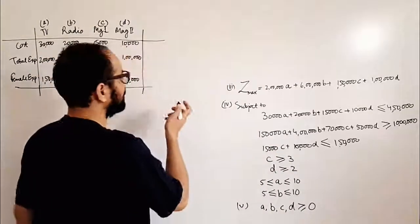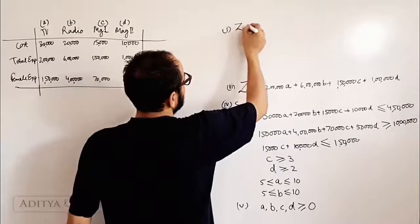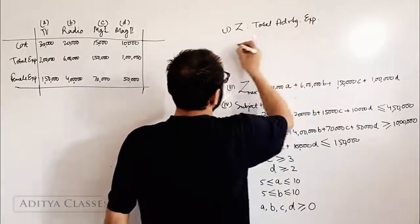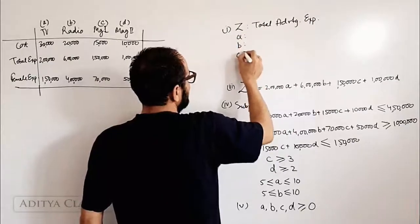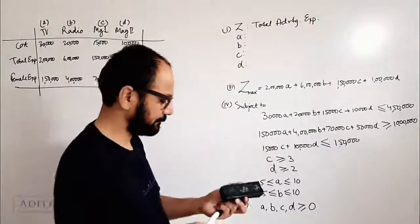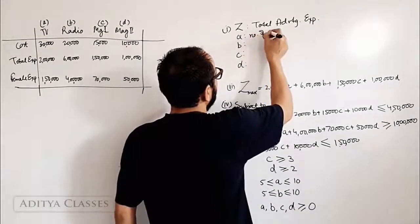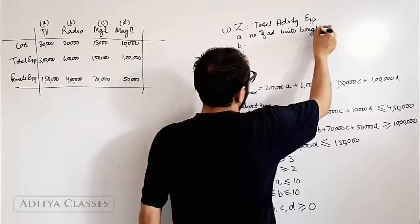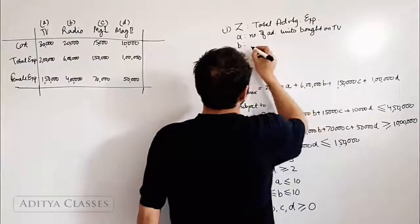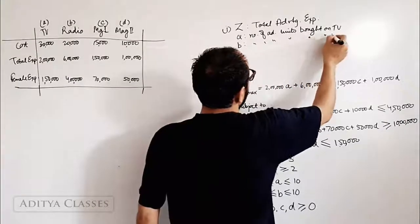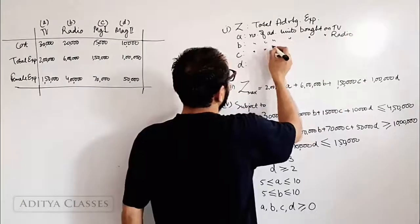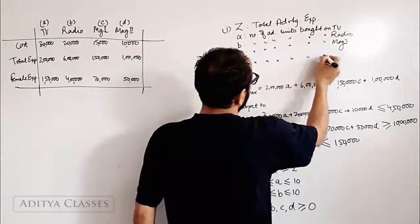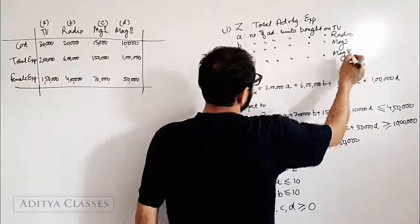Let us declare the decision variables. A, B, C and D are the number of advertising units: A is the number of ad units bought on television, B is the number of ad units bought on radio, C is the number of ad units bought on magazine one, and D is the number of ad units bought on magazine two.